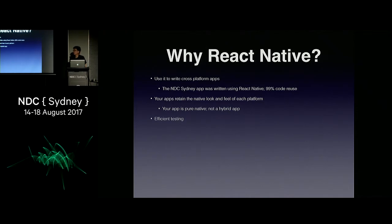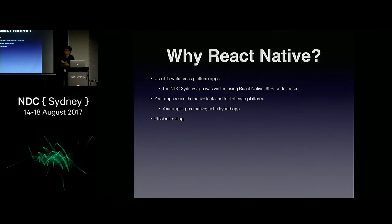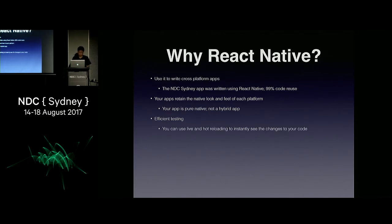React Native allows you to efficiently test your app. When you want to make changes, once you have deployed your app to your emulator or real device, you make changes to your JavaScript code, save it, and the changes are automatically reflected on the simulator or real device. There's no need to redeploy your application, which is usually a time-consuming affair. You can use live and hot reloading to instantly see changes to your code.